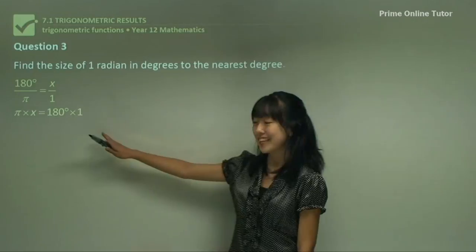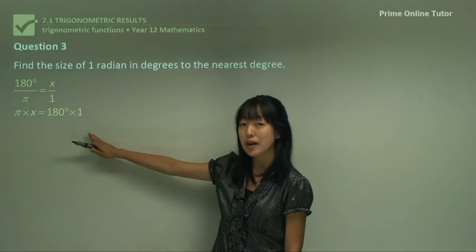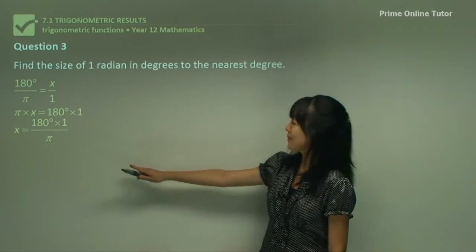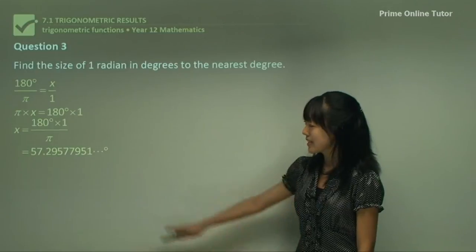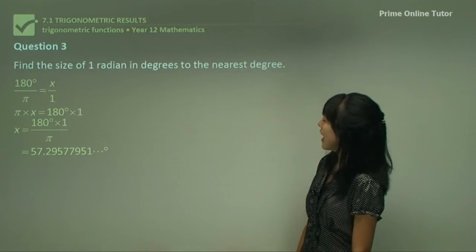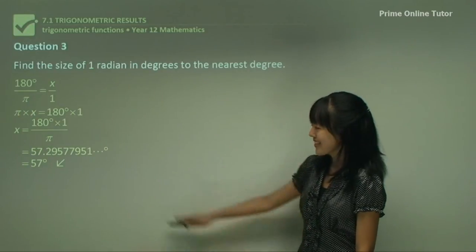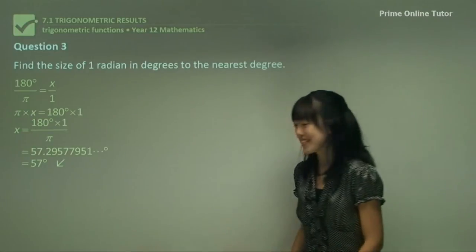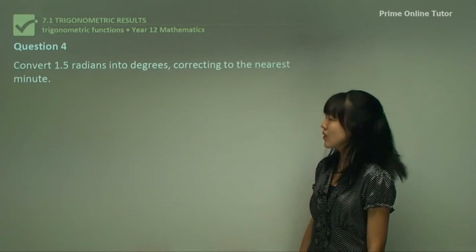When we do we get this. We want to make x the subject so divide throughout by π and you get x equals this. Now grab your calculators and you'll get a decimal value just like this. We've got to find to the nearest degree so you get a final answer of 57 degrees. Not bad at all. I think you're getting familiar with these questions.